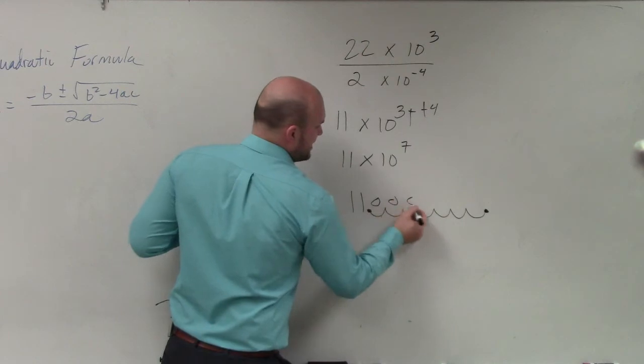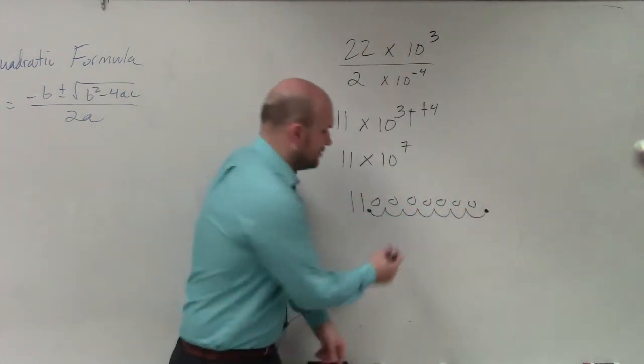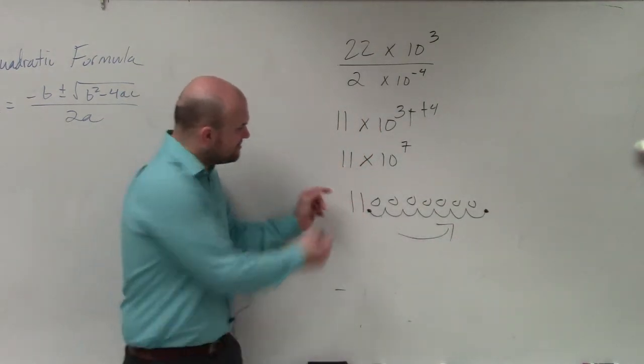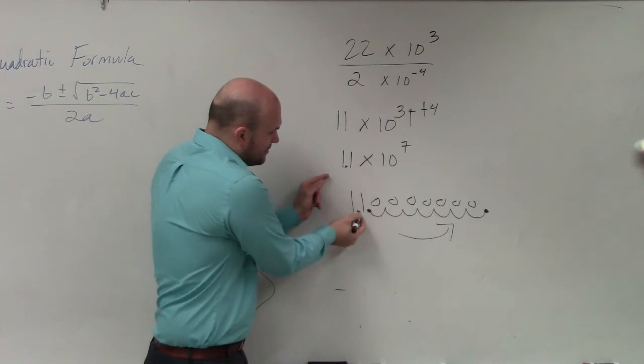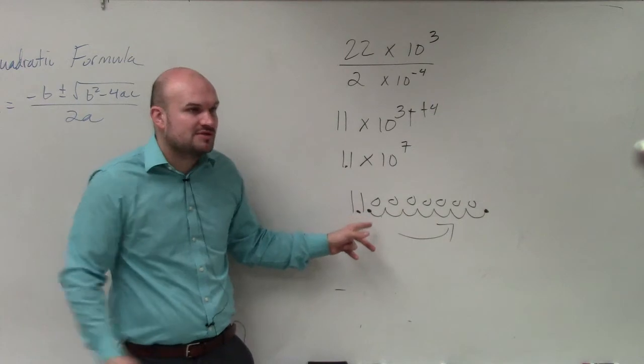So if I was going to write this, I would have to move the decimal point over seven units to the right, correct? However, I need my decimal point to be right here. So therefore, how many values to the right am I going to have to move if the decimal point's right here?